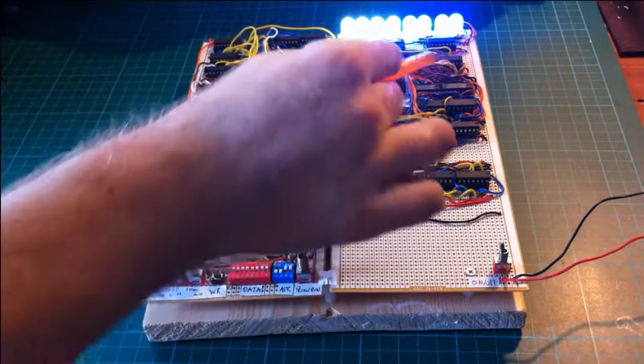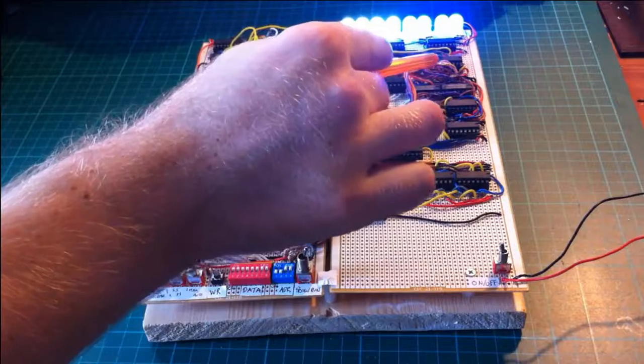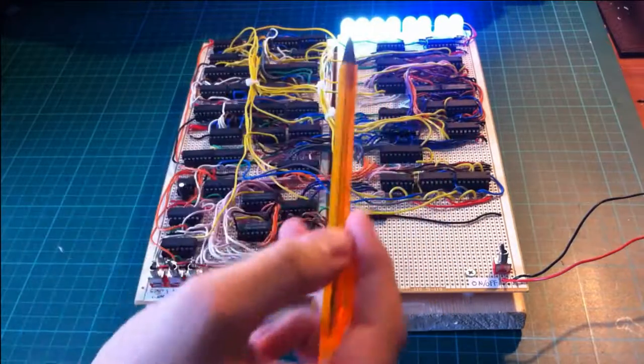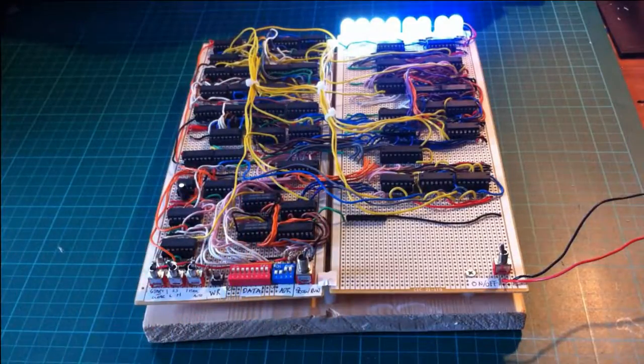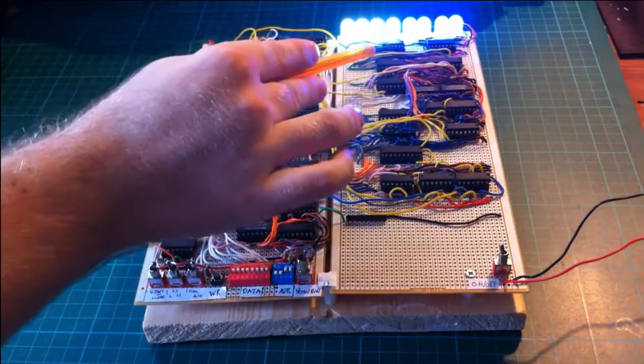Here is the adder subtractor which performs the computer's calculations. Either side is a register which together hold the two numbers to be added or subtracted. Once the calculation has taken place, the result is stored in the upper register called the accumulator.